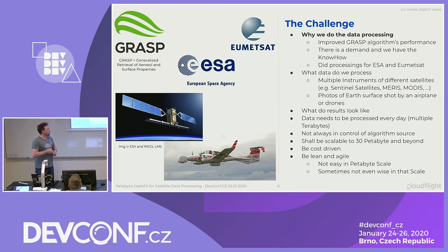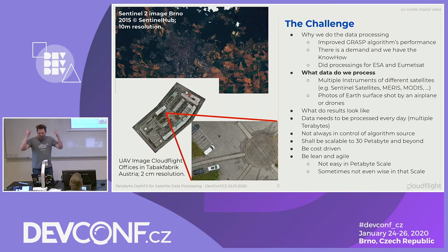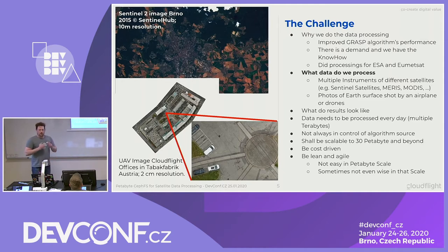We did some processing for ESA and other stuff. To give you an idea of what data we process: these are concrete pictures. The upper one is from a Sentinel-2 image — that's actually an image of Brunner. Sentinel-2 has optical sensors in it, so you can basically do photographs, and you can use that with a 10-meter resolution at the ground level to calculate things from it. If you took every day of the Sentinel-2A mission, that would be roughly seven terabytes per day from every instrument on that satellite.